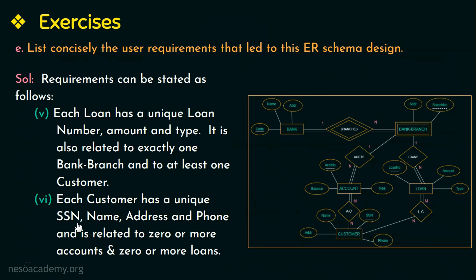The last entity type is customer. The requirement is: each customer has a unique SSN (social security number), as well as name, address, and phone attributes. A customer is related to zero or more accounts and zero or more loans — the customer entity type may or may not have accounts and may or may not take loans. You can also write the requirements in your own words as long as you mention entity types, attributes, relationship types, and other important information.